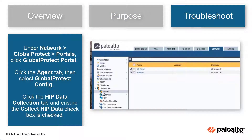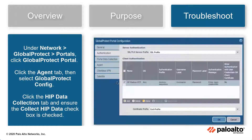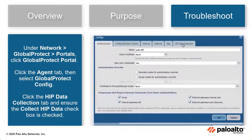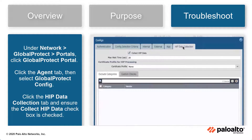Under Network GlobalProtect Portals, click GlobalProtect Portal, select the Agent tab, then select the GlobalProtect config. Finally, select the HIP Data Collection tab and select the Collect HIP Data check mark to pass the Best Practice Check.